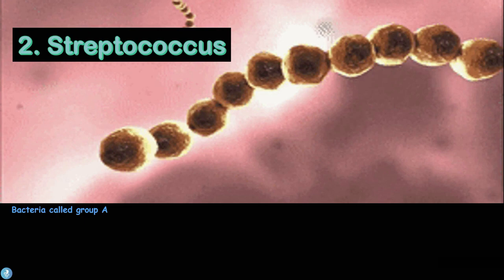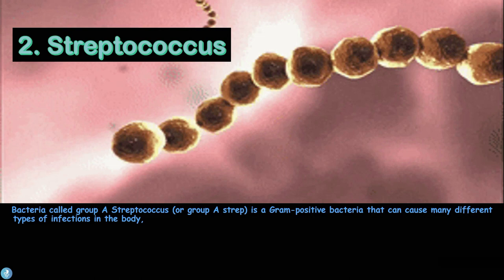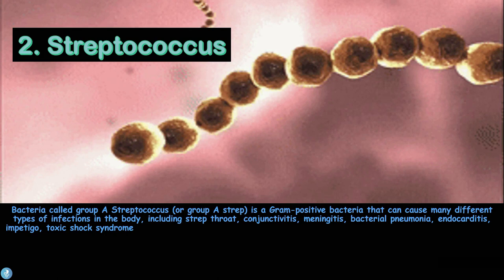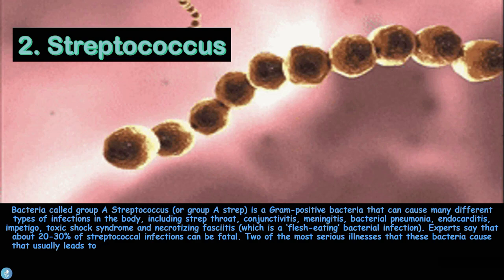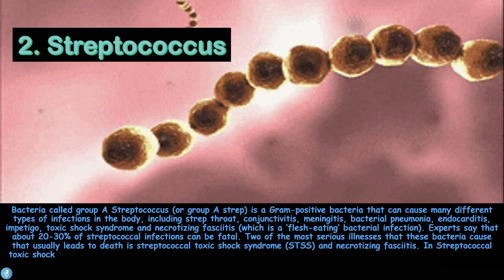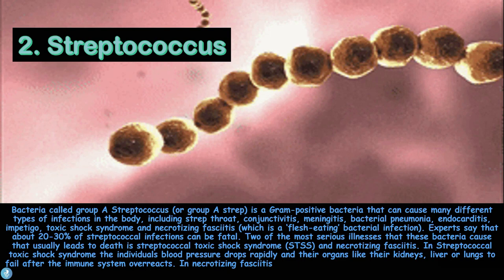Number two is streptococcus. Group A streptococcus, or Group A strep, is a gram-positive bacteria that can cause many different types of infections, including strep throat, conjunctivitis, meningitis, bacterial pneumonia, endocarditis, impetigo, toxic shock syndrome, and necrotizing fasciitis, which is a flesh-eating bacterial infection. Experts say that about 20 to 30 percent of all streptococcal infections can be fatal.